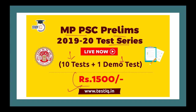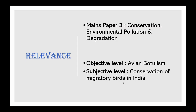Now what is the relevance of this topic? It will be covered in your mains paper 3: conservation, environmental pollution and degradation. At the objective level you should know what avian botulism is. At the subjective level, you should have deep knowledge about conservation of migratory birds and what migratory birds are.